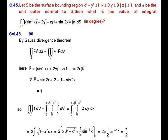Let n-cap be the outward normal to the surface and we have to evaluate the given surface integral. Since S is a closed surface, we can apply the Gauss Divergence Theorem. By the Gauss Divergence Theorem, the surface integral of F dot n-cap dS equals the volume integral of divergence of F dV. From the given surface integral we identify F equal to sin²x î + 2y ĵ minus z(1 + sin 2x) k̂.